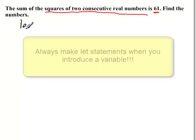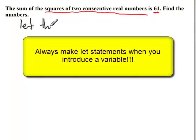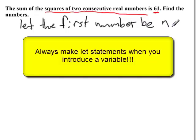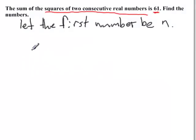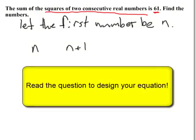Let's let the first number be n. So my two numbers are n and the next one, the next consecutive real number is n plus 1. So I know that the sum of the squares of these two numbers is equal to 61.